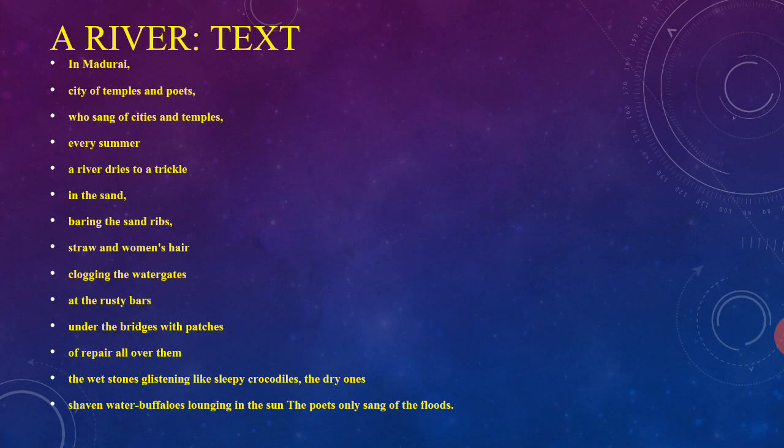The poem shows us that Ramanujan is a realistic poet. He doesn't like the shallow romantic sentiments which makes one escape from reality. In the poem entitled 'A River', A.K. Ramanujan dislikes those poets, both old and new, who always write about cities and temples.